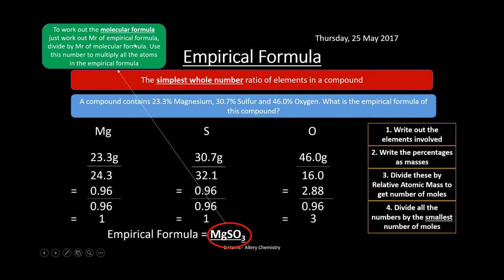To find the molecular formula from the empirical formula, work out the Mr of the empirical formula, then divide the Mr of the molecular formula (which should be given) by that value. Use this number to multiply all atoms in the empirical formula. For example, if the result is 3, the molecular formula would be Mg₃S₃O₉.